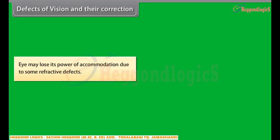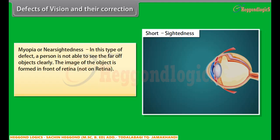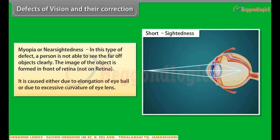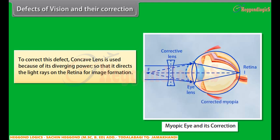Defects of vision and their correction: the eye may lose its power of accommodation due to some refractive defects. There are three such defects. Myopia or near-sightedness — in this type of defect, a person is not able to see far-off objects clearly. The image of the object is formed in front of the retina. It is caused either due to elongation of the eyeball or due to excessive curvature of the eye lens. To correct this defect, a concave lens is used because of its diverging power, so that it directs the light rays on the retina for image formation.